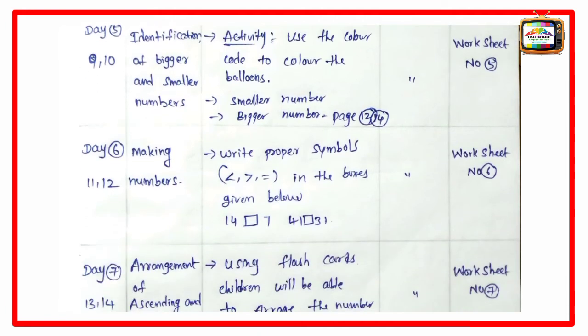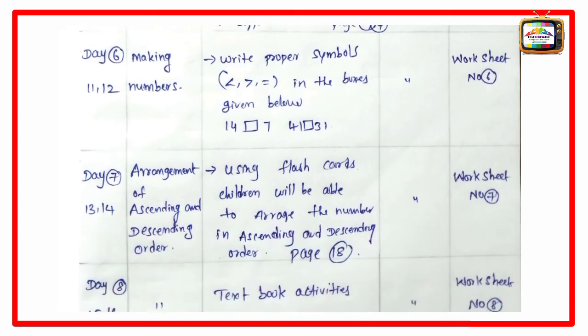Day 6, periods 11-12, making numbers. Write proper symbols: less than, greater than, equal in the boxes given below. 14-7, then 41-31. Whole class activity, then group activity worksheet number 6, then individual work.